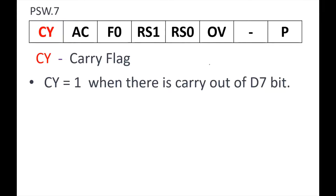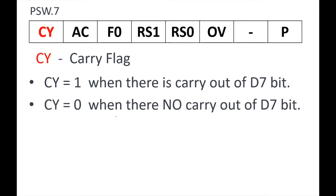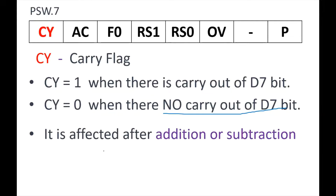The carry flag is also called PSW.7. It becomes 1 when there is a carry out of the D7 bit. In an 8-bit number, individual bits are named D0 through D7, where D7 is the most significant bit. When you perform an arithmetic operation like addition or subtraction and there is a carry out of D7, the carry flag becomes 1. When there is no carry out of D7, the carry flag becomes 0. This flag is affected after addition or subtraction operations.